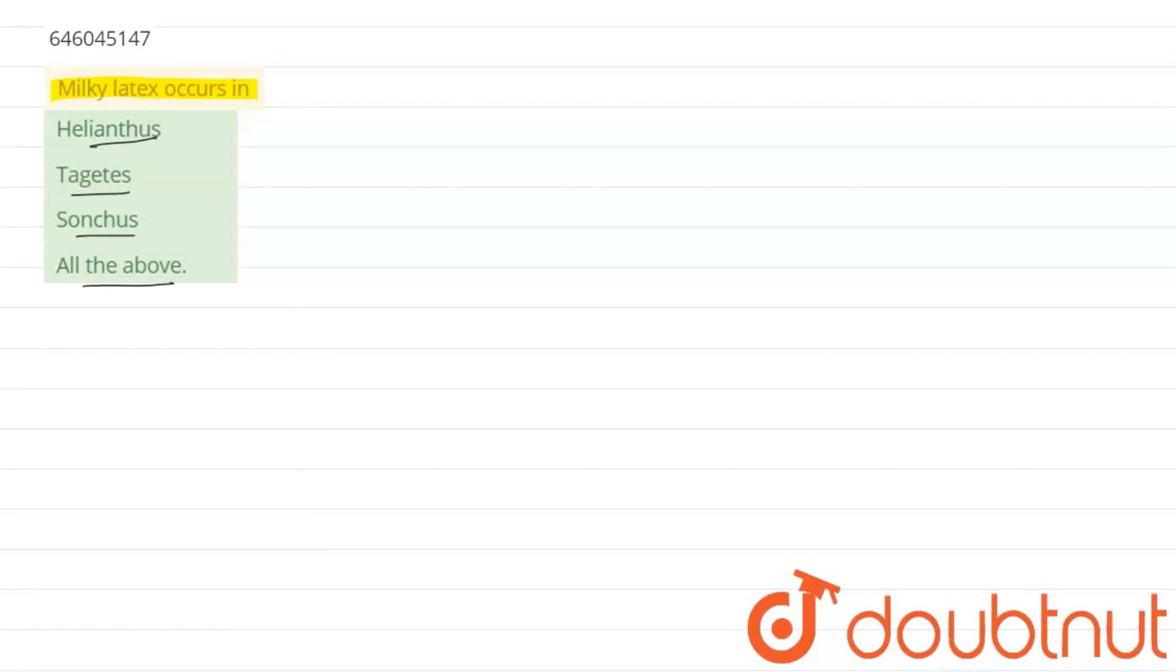So first we start discussing what is this latex. Latex is basically a complex emulsion which consists of proteins, alkaloids, starch, oils, tannins, resins, and also gum. So it is a very complex type of emulsion.